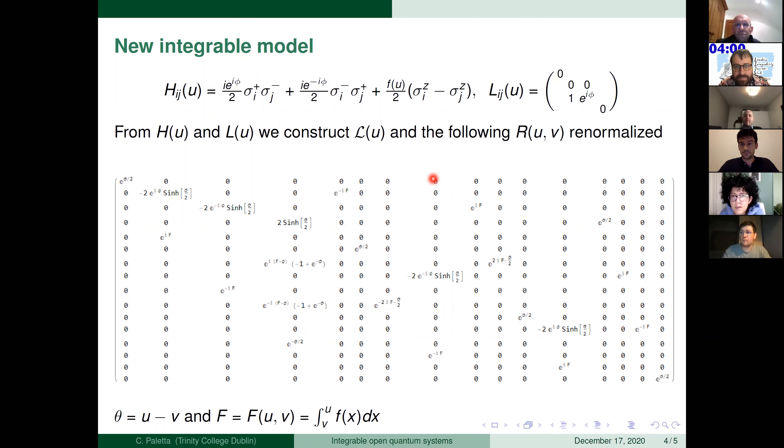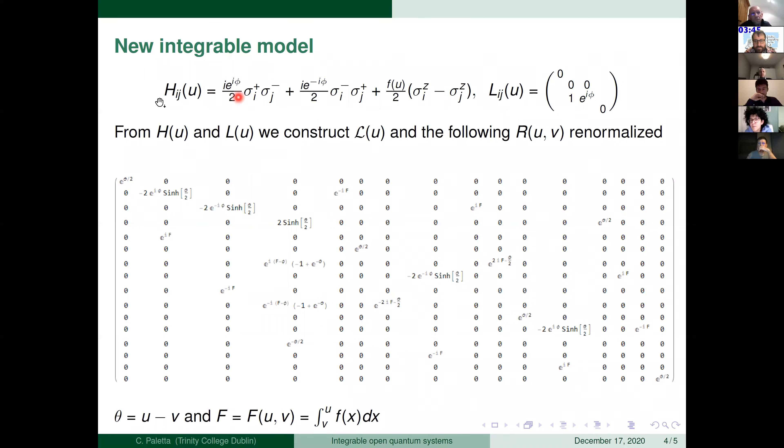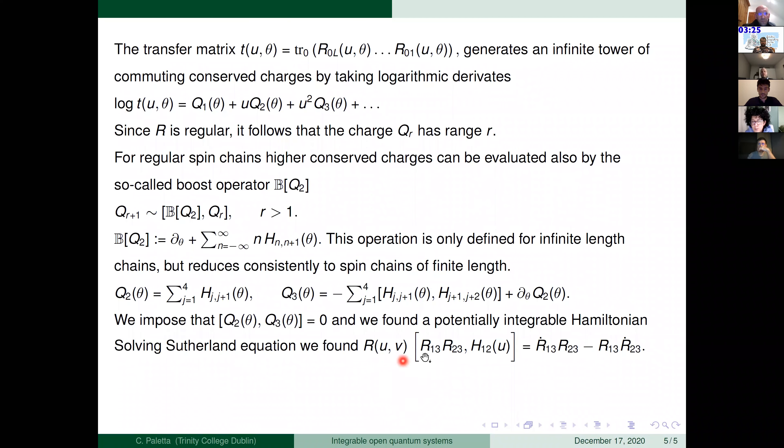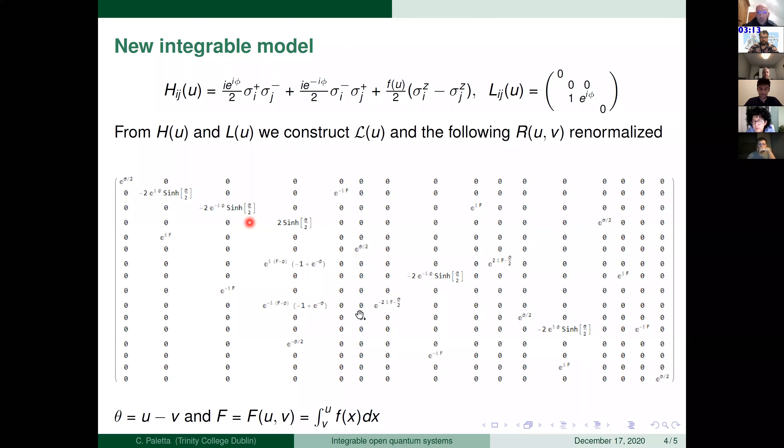Sorry, you start from R(u,v) or from Hamiltonian? What is the sequence of actions? You start from R or from H? We start giving an ansatz of the H and L. For example, I don't know, six-vertex type for the H and just two elements on the L. And then we imposed the condition under which this operator was integrable. And which integrable, I mean, we imposed the commutation between Q₂ and Q₃. And then we found the R using the Sutherland equation. So this equation here, that gives the entry of the R matrix. And we found this, sorry, we found this one. And then, of course, we checked that Yang-Baxter was solved for this Hamiltonian, just to be sure. For this R. Yeah, thank you.